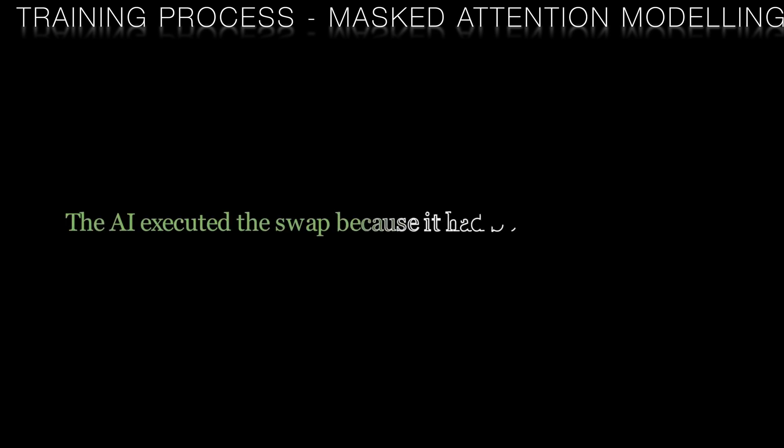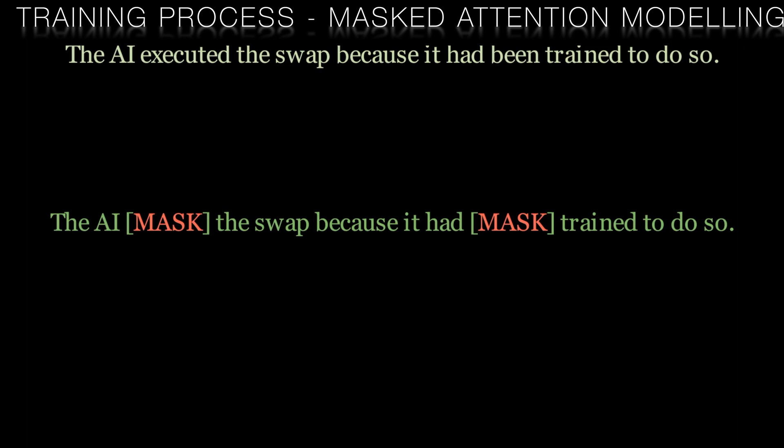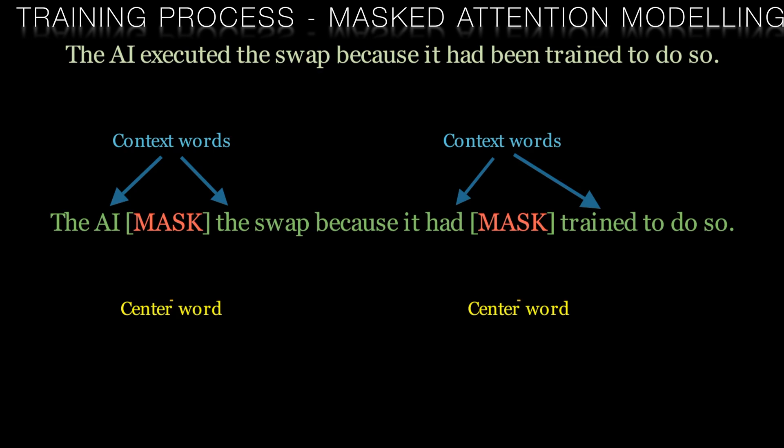Now let's talk about the training process. Bloomberg used a technique called Masked Attention Modeling to train their model. This involves masking out a certain percentage of tokens in the input text and then asking the model to predict the masked tokens based on the context provided by the remaining tokens. This training method encourages the model to develop a deep understanding of language structure, grammar, and semantics. It also enables Bloomberg GPT to generate contextually appropriate and coherent responses to a wide range of financial NLP tasks.